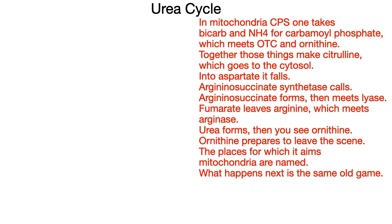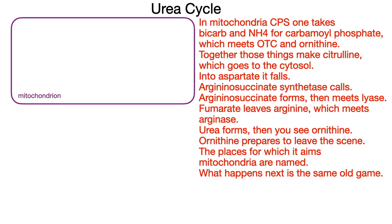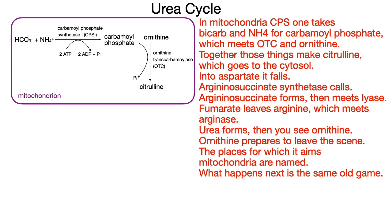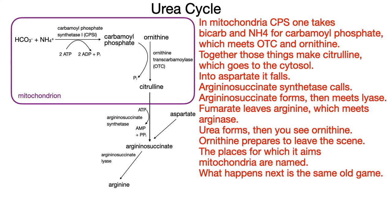In mitochondria, CPS1 takes bicarb and NH4 for carbamyl phosphate, which meets OTC and ornithine. Together those things make citrulline, which goes to the cytosol — into aspartate it falls. Argininosuccinate synthetase calls. Argininosuccinate forms, then meets lyase. Fumarate leaves arginine.